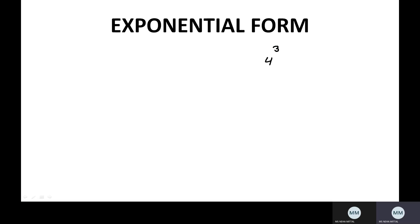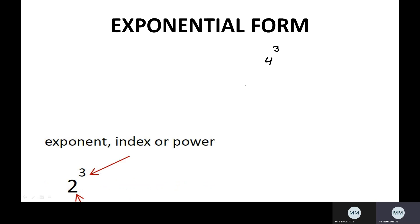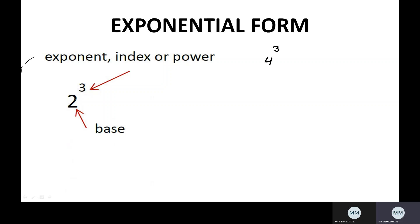If I write any number with some power, then that form is known as the exponential form. Let me show you one more example: 2 raised to the power 3 — a number 2 with power 3. So it is also exponential form. Power can also be negative. For example, 4 raised to the power minus 10 is also an exponential form.